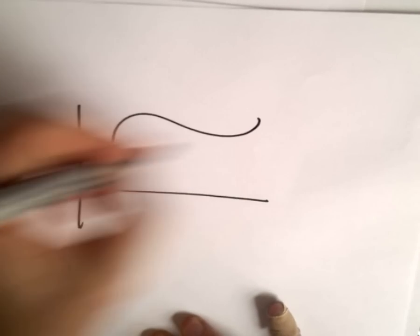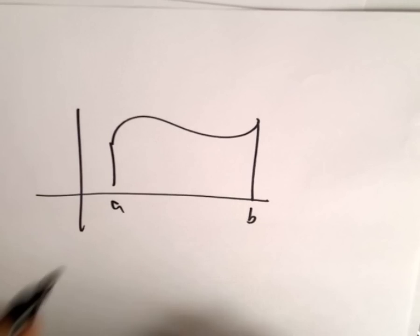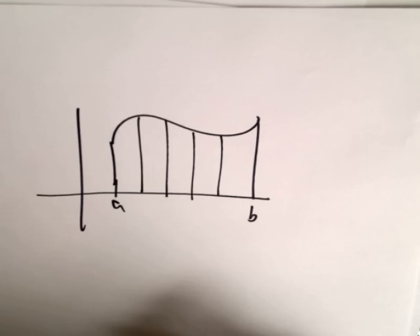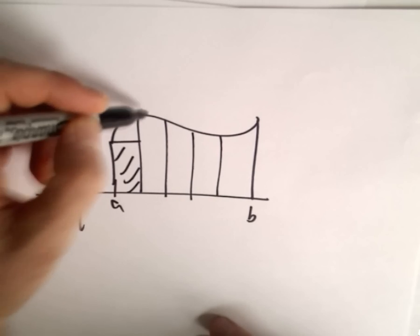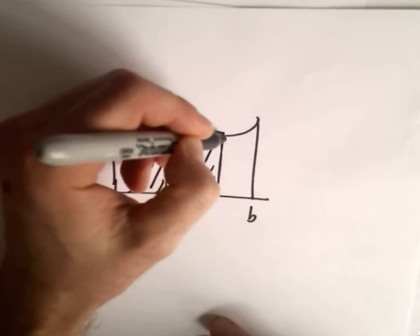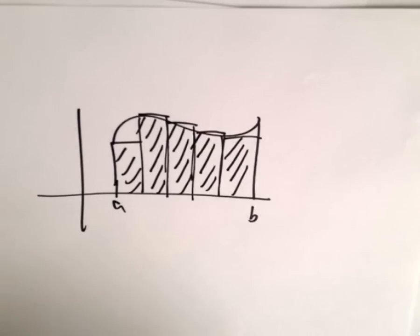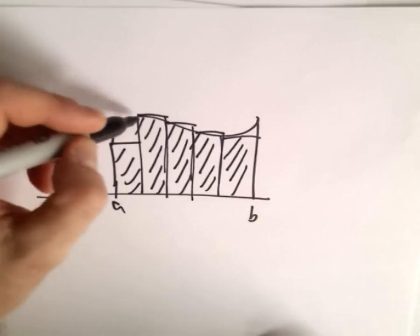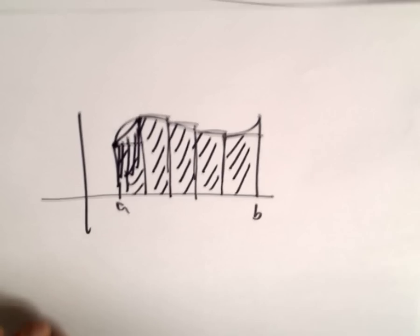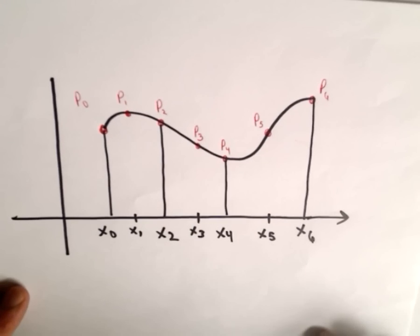You're trying to approximate a definite integral from A to B. The way you typically start off in calculus approximating it is you use rectangles — you either use left endpoints or right endpoints. There's also the trapezoid rule, which instead of using rectangles, you take the endpoints and use straight line segments. Simpson's Rule does something slightly different.